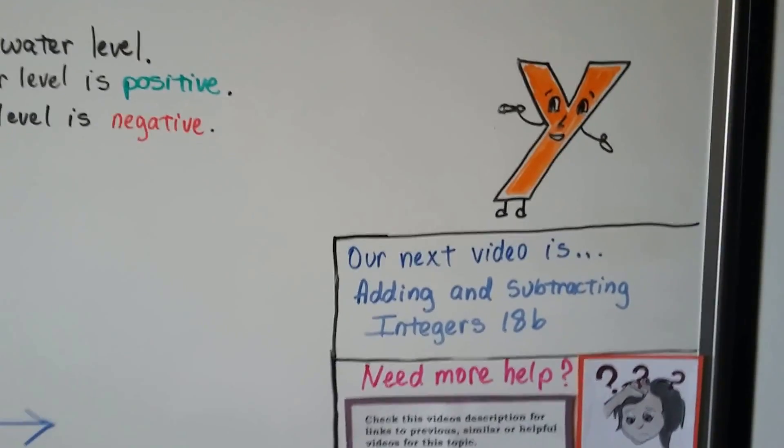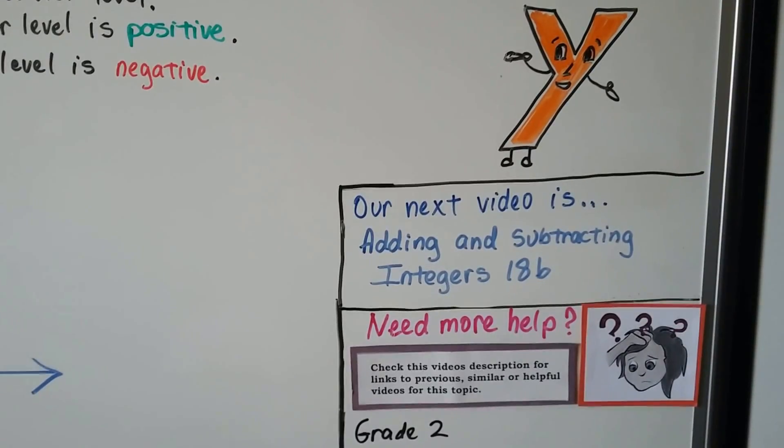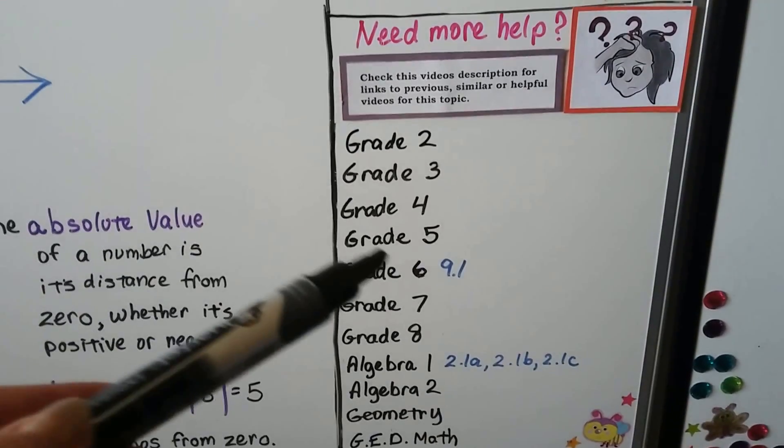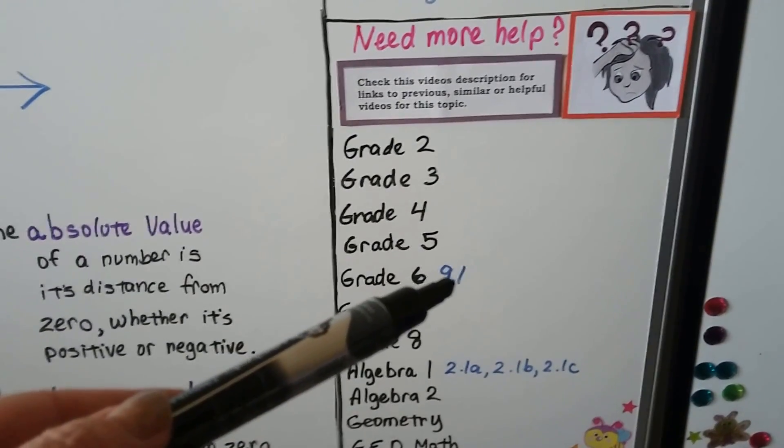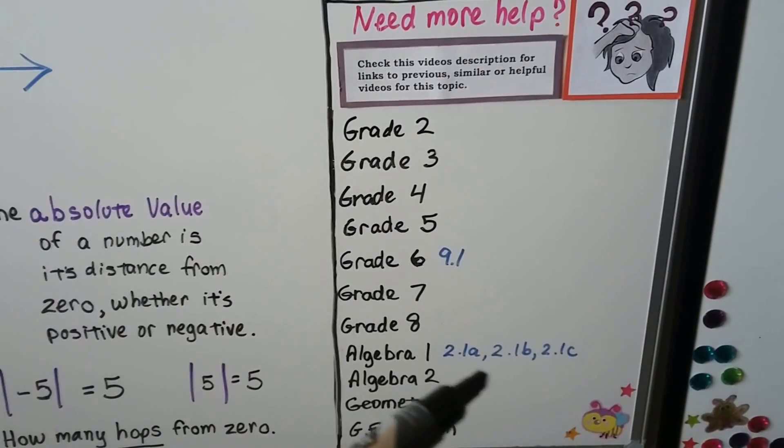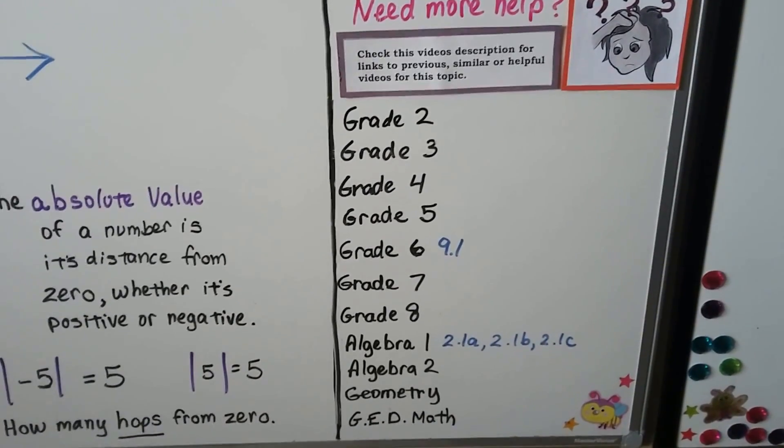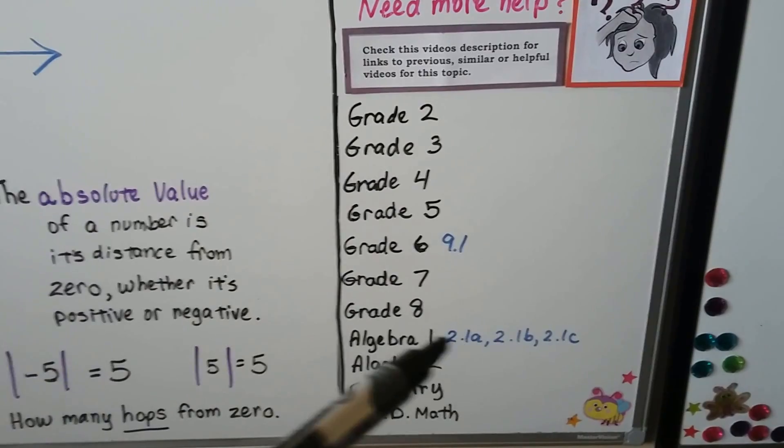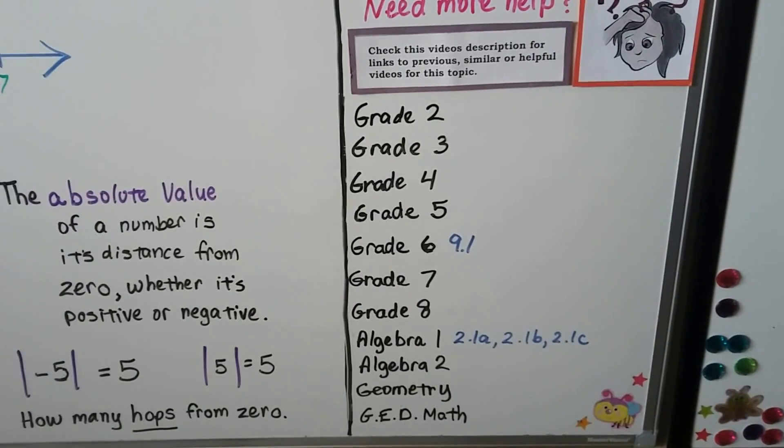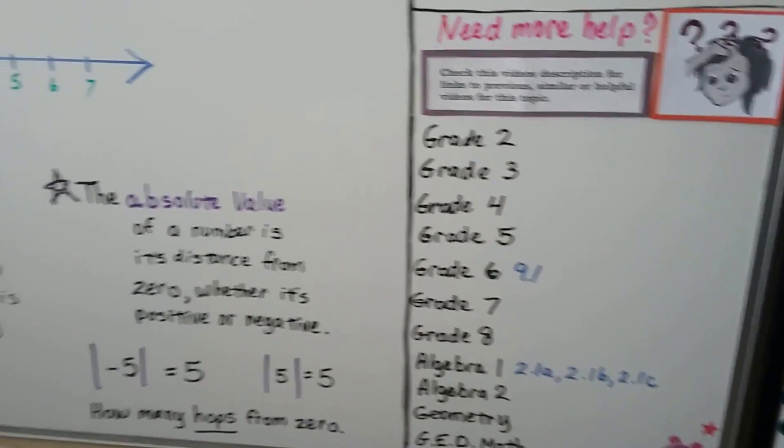We're going to talk about adding and subtracting integers, these negative and positive numbers, in the next lesson, 18b. And I'm going to have links to integers from Grade 6, 9.1, and Algebra 1, 2.1a, 2.1b, and 2.1c. So this gets a little more in depth about the absolute value and the negative and positives before we start adding and subtracting them.